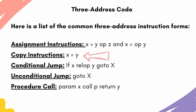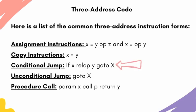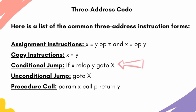Copy instructions assign the value of y to x. Conditional jump takes the form: if x relational-operator y, go to z. This corresponds to an if-else statement — if the condition is satisfied, we execute one block; otherwise, we execute another block.